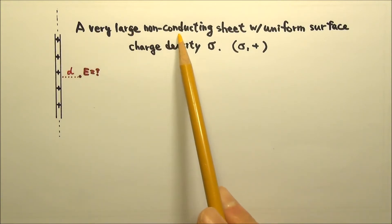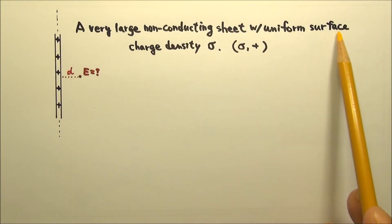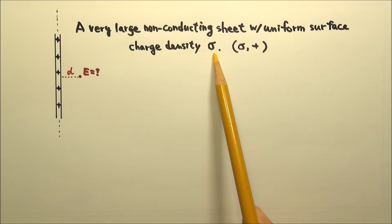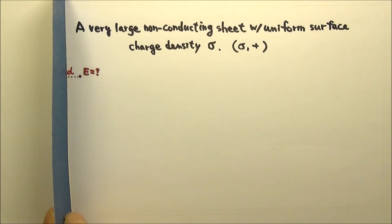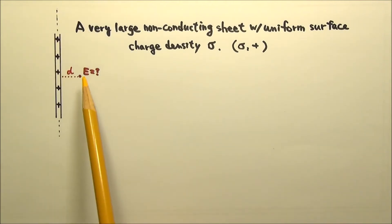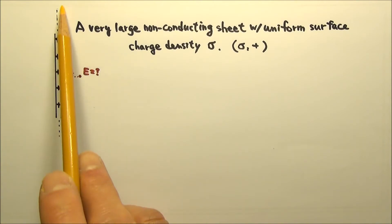Consider a very large non-conducting sheet with a uniform surface charge density sigma, where sigma is positive. Here this sheet is drawn edge-on, so the sheet is perpendicular to the screen. Find the electric field produced by this sheet of charge a distance d away.